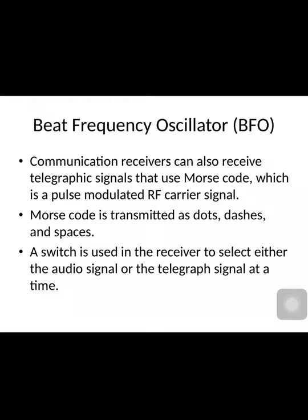Morse code is transmitted as dots, dashes, and spaces. This means that if we transmit letters A, B, C, D or words, a coding method is used. In this coding method, we use dots, dashes, and spaces to represent each letter. For example, A might be represented by three dots, B by two dots, C by three dots, and so on with different combinations of dashes.